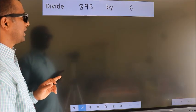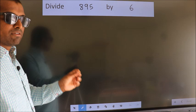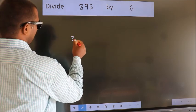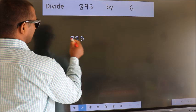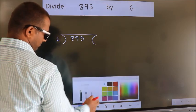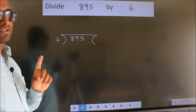Divide 895 by 6. To do this division, we should frame it in this way. 895 here, 6 here. This is your step 1.